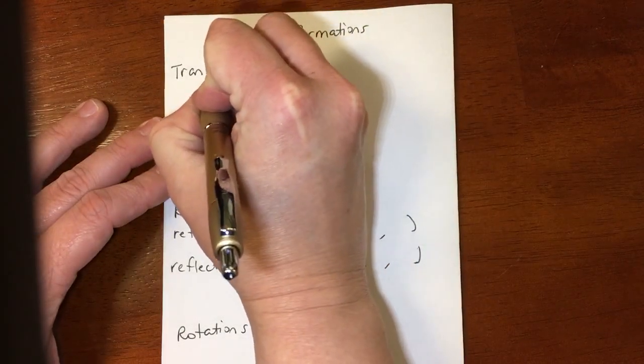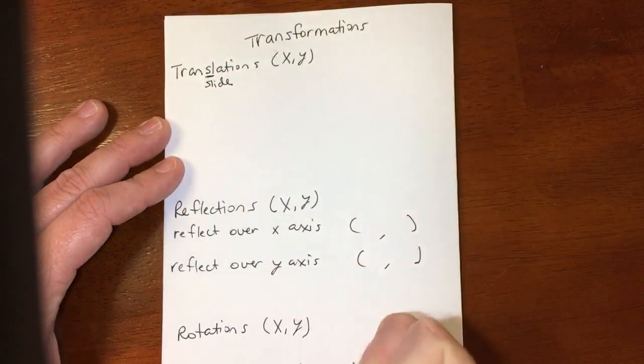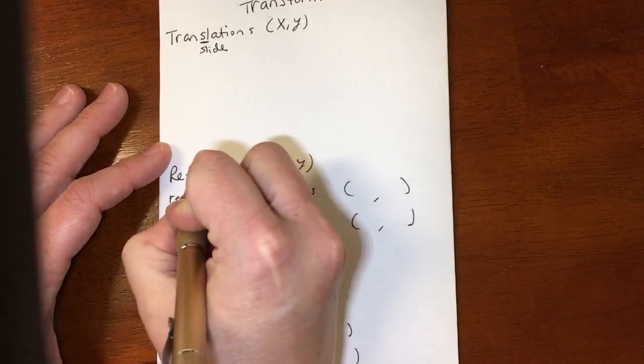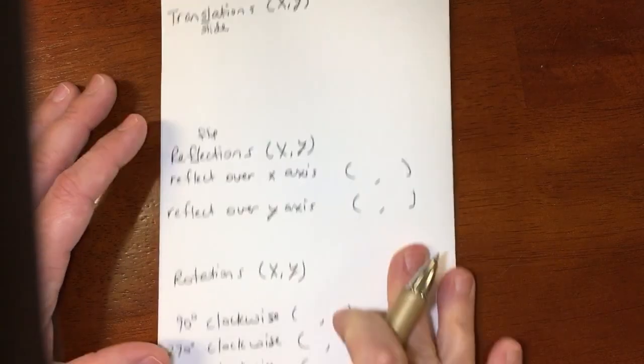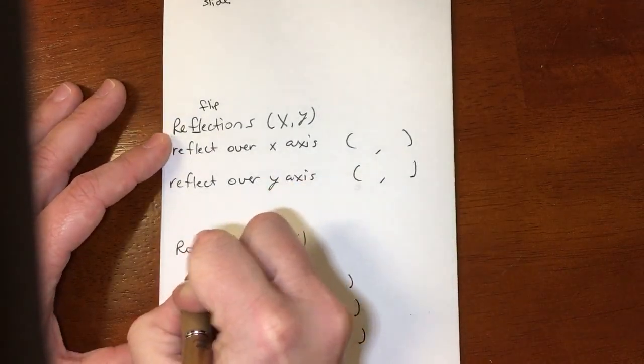Translations slide - that S-L is for slide. Reflections flip - that F-L is for flip. And rotations turn - the T is for turn.